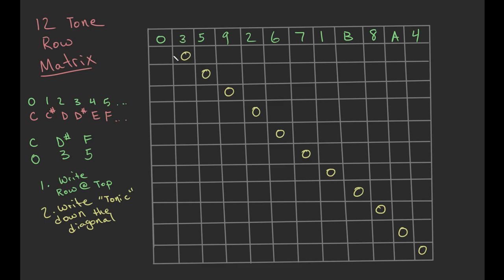Step three: one method is to look at the interval from three to zero, which is adding nine half steps, then add nine to everything. But here's an easier way: look at B — the note right before your tonic. If we continue the pattern, after B comes zero. So find B, then go all the way down to the row that has zero next to it.